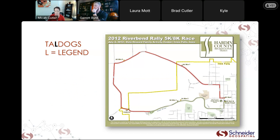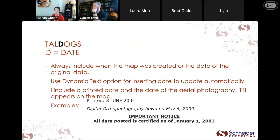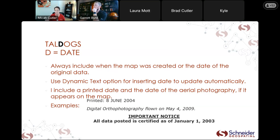Date, date, date — don't forget dates! I think that's super important. Maps are a snapshot in time. Things change — rivers move, parcel boundaries change, ownership changes. Make sure your map has a date, whether it's a printed date, last update, or aerial photography flown. If you can use dynamic text for your date, it won't update automatically so you don't have to remember to manually change it every time you print a new copy.